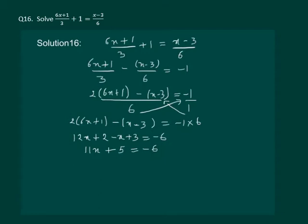Let us transport plus 5, we get minus 6 minus 5 that means 11x equal to minus 11 then x is equal to minus 11 by 11 which is equal to minus 1. Hence x equal to minus 1 is the required answer.